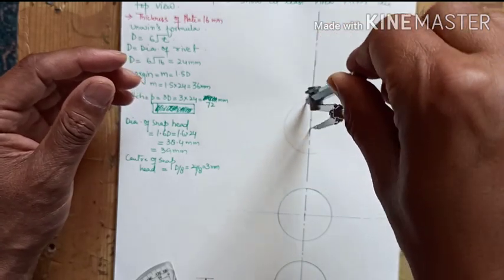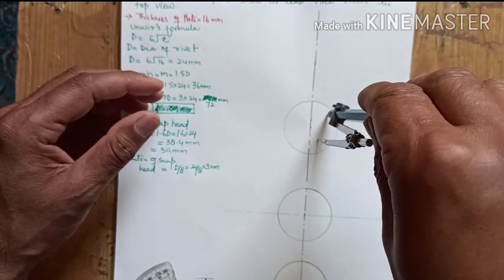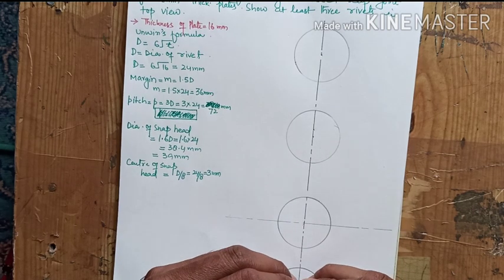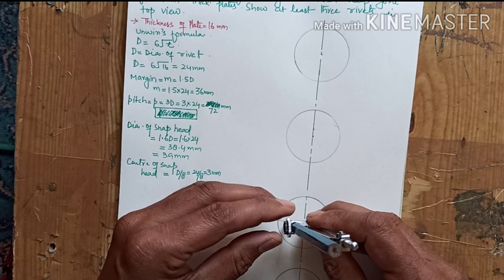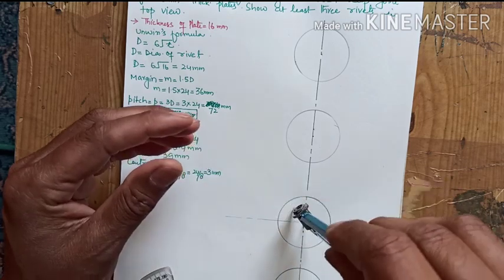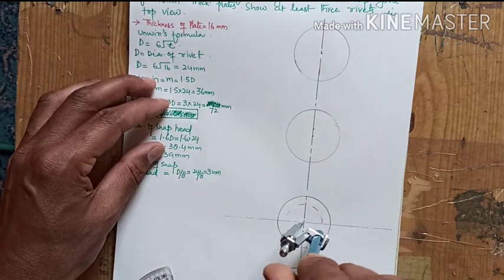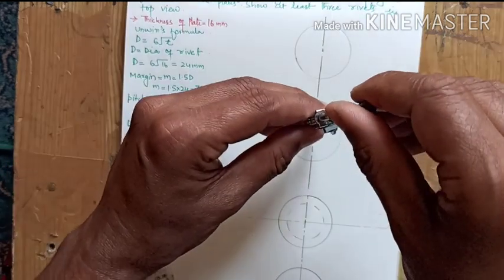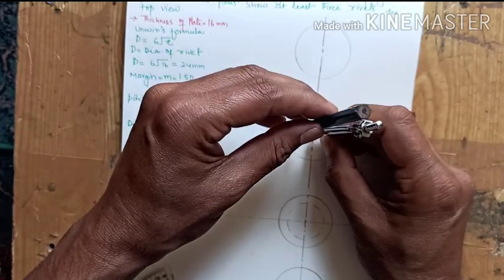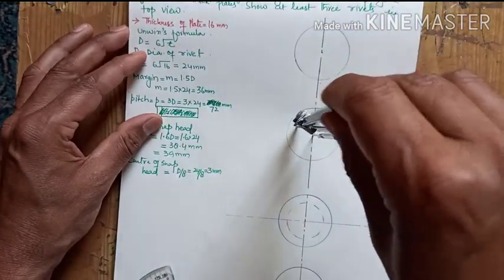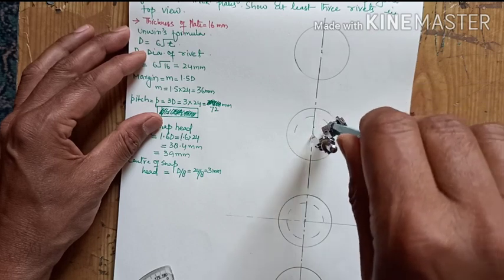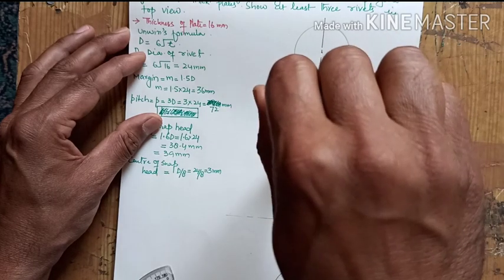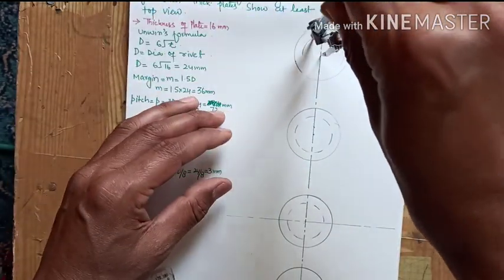With the same dimensions, now we have to show the rivet diameter which is beneath the snap head. We have to represent the rivet diameter with a dotted circle and its radius was 12mm. We have to open up a compass of 12mm and draw a dotted circle by using the same center which we have used for drawing the snap head.